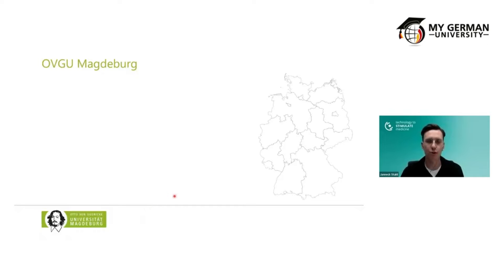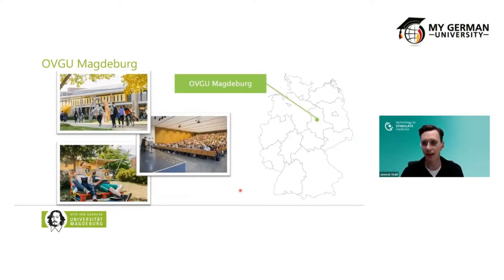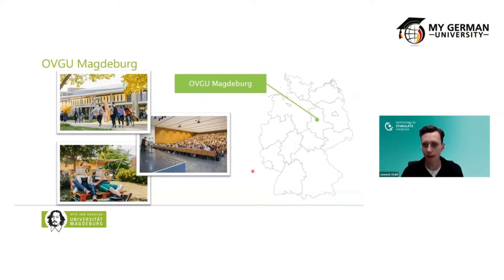To give you a small impression: we are from Magdeburg, located about one and a half hours from Berlin, here in the middle of Germany in Saxony-Anhalt. As you can see, here are some impressions from the campus — we have one campus where our program takes place. It is a really green campus with a high amount of green areas.